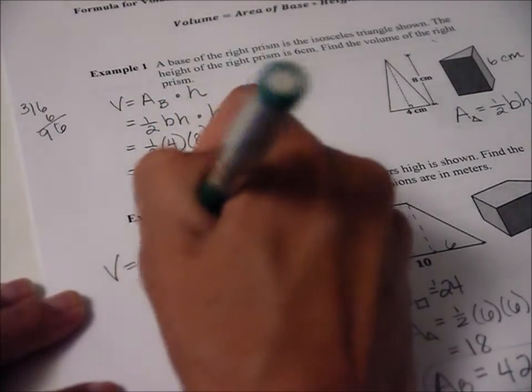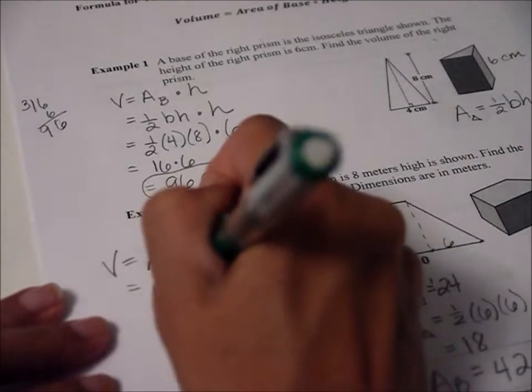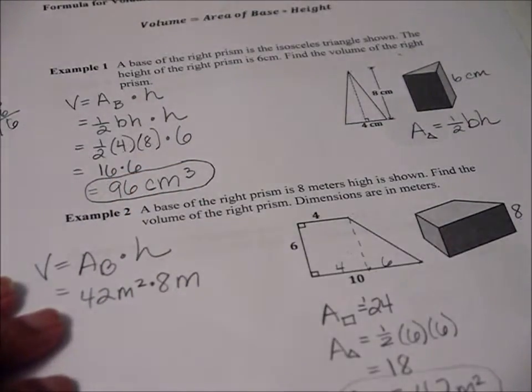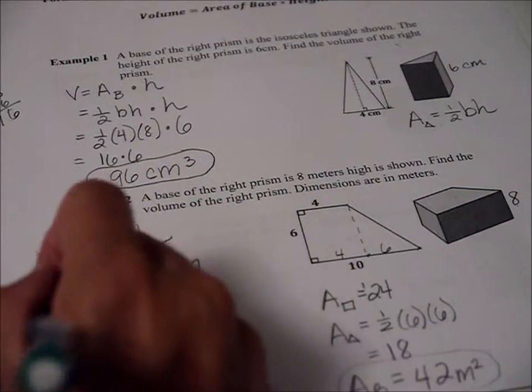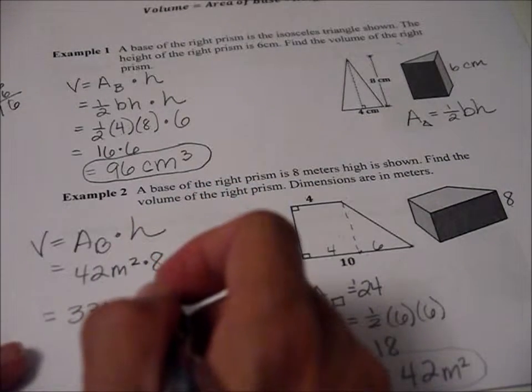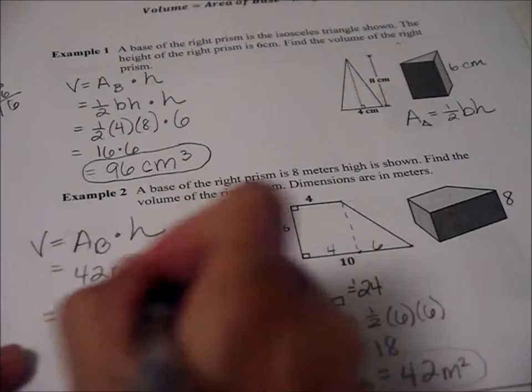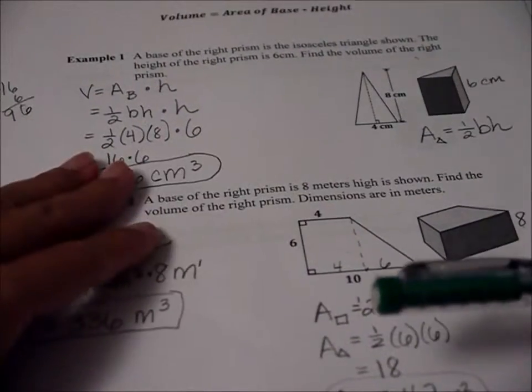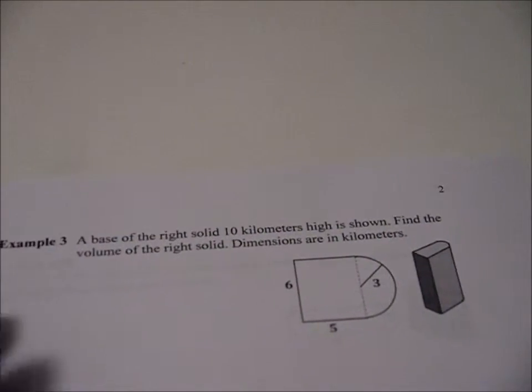And now we're going to multiply that times eight high to find our volume. Volume equals area of the base times height. So the area of the base we already found was 42. And here notice it was meters squared. And the height of this figure is eight meters. So if we do 42 times eight, I am going to cheat because of time. 42 times eight is 336. And then notice we have m squared and m to the one. So now we have m cubed because we have two m's and one m. So m cubed. And that is our answer. That's our volume. So it should feel a little less tricky than the surface area. So why don't you go ahead and give this a shot on your own. And then we'll get back together.